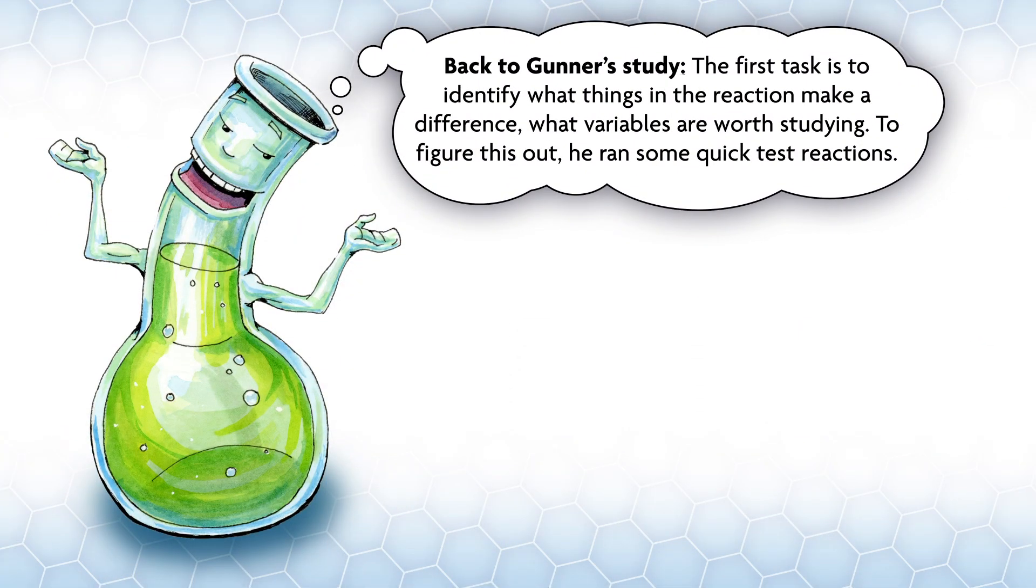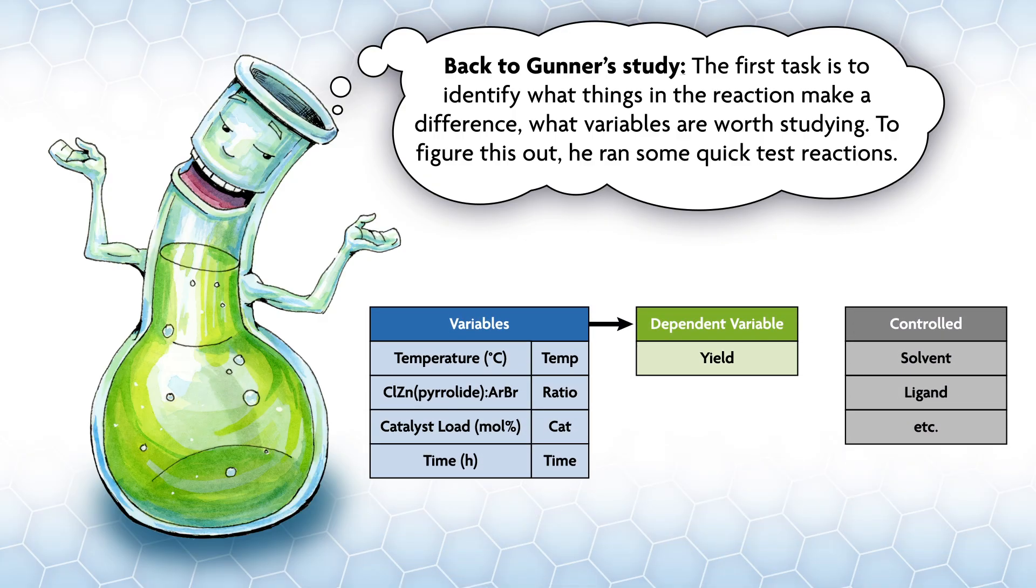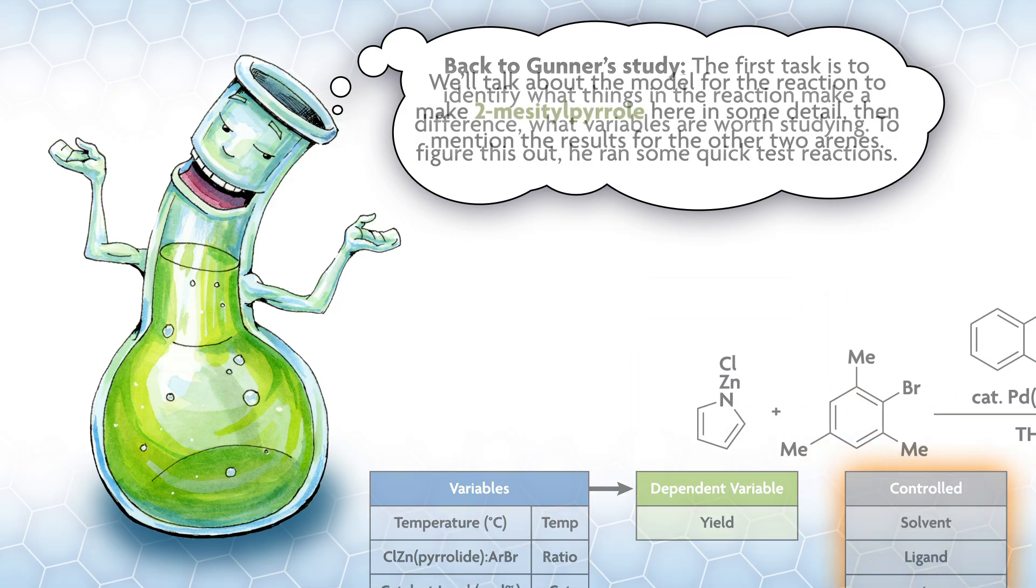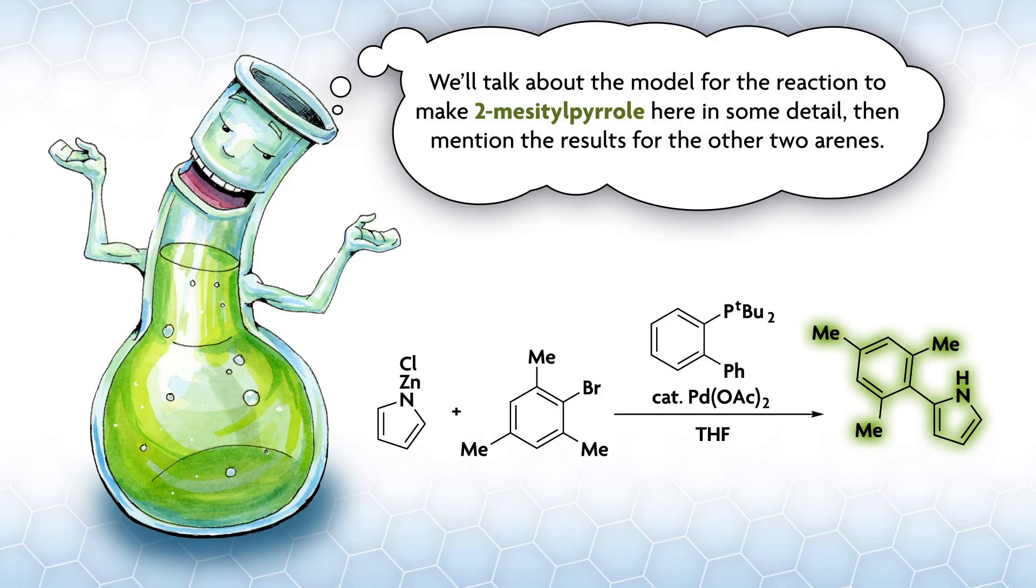Back to Gunner's study. The first task is to identify what things in the reaction make a difference, what variables are worth studying. To figure this out, he ran some quick test reactions. He identified four key variables affecting yield. Temperature, zinc pyrolide to aerobromide ratio, the catalyst loading, and the time. These are your independent variables, the causes. Yield is the dependent variable, the effect or the response, as it's called in this method. Everything else, ligand, solvent, etc., is controlled.